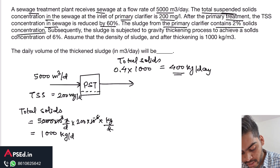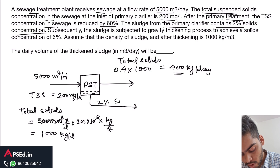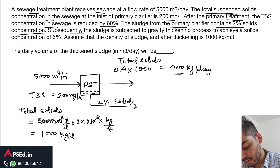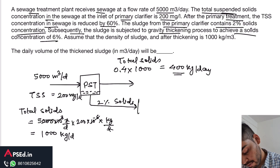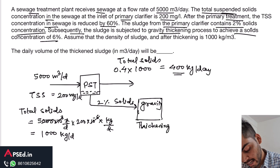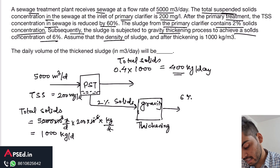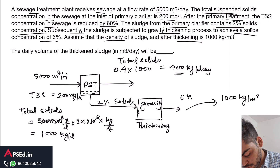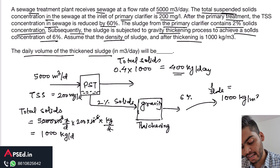At the bottom of the primary sedimentation tank there is sludge deposition with 2% solids concentration. Subsequently, this sludge is subjected to a gravity thickening process to achieve a solids concentration of 6%. The density of sludge after thickening is assumed to be 1000 kg per cubic meter. We need to find the daily volume of thickened sludge in cubic meters per day.